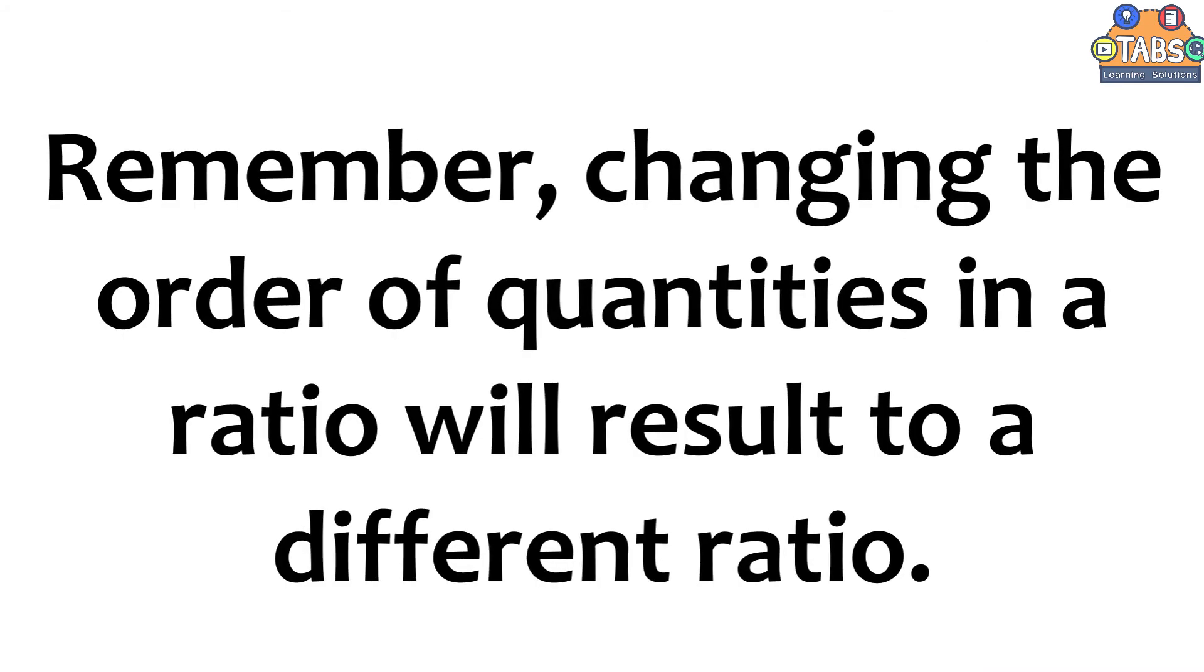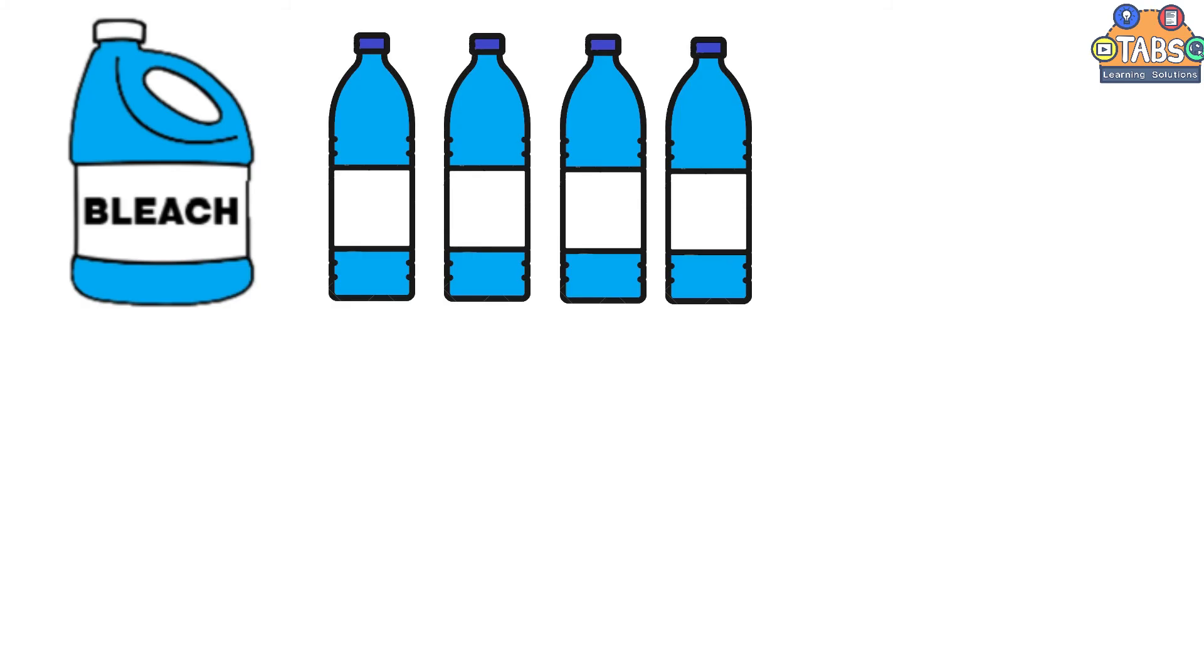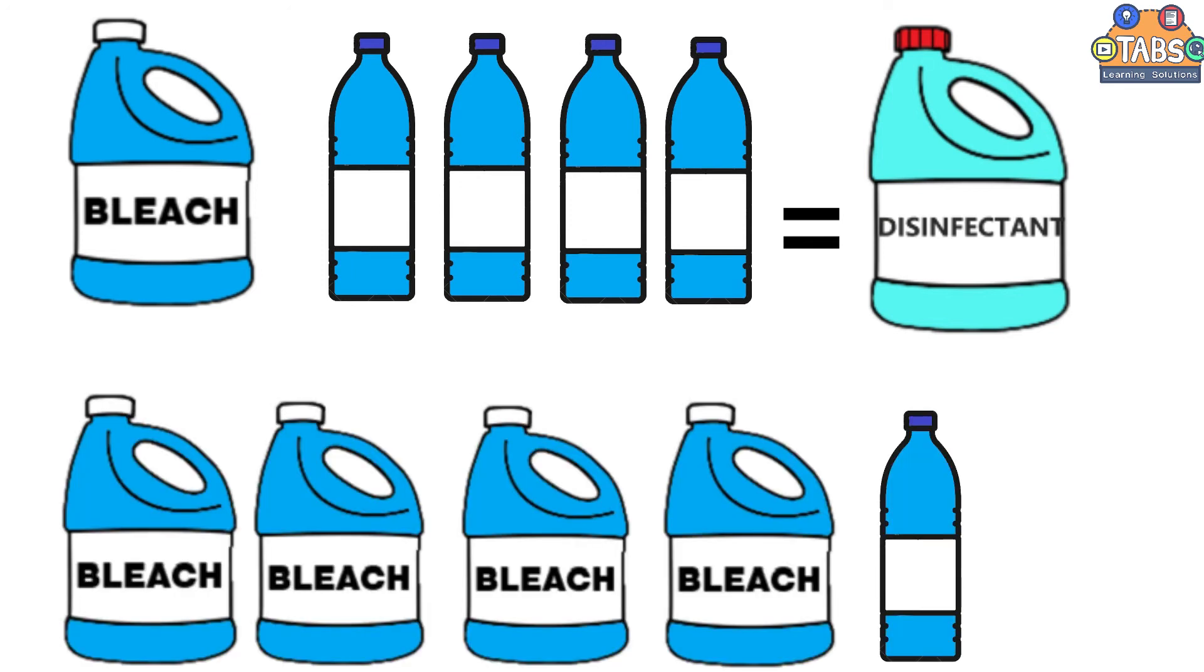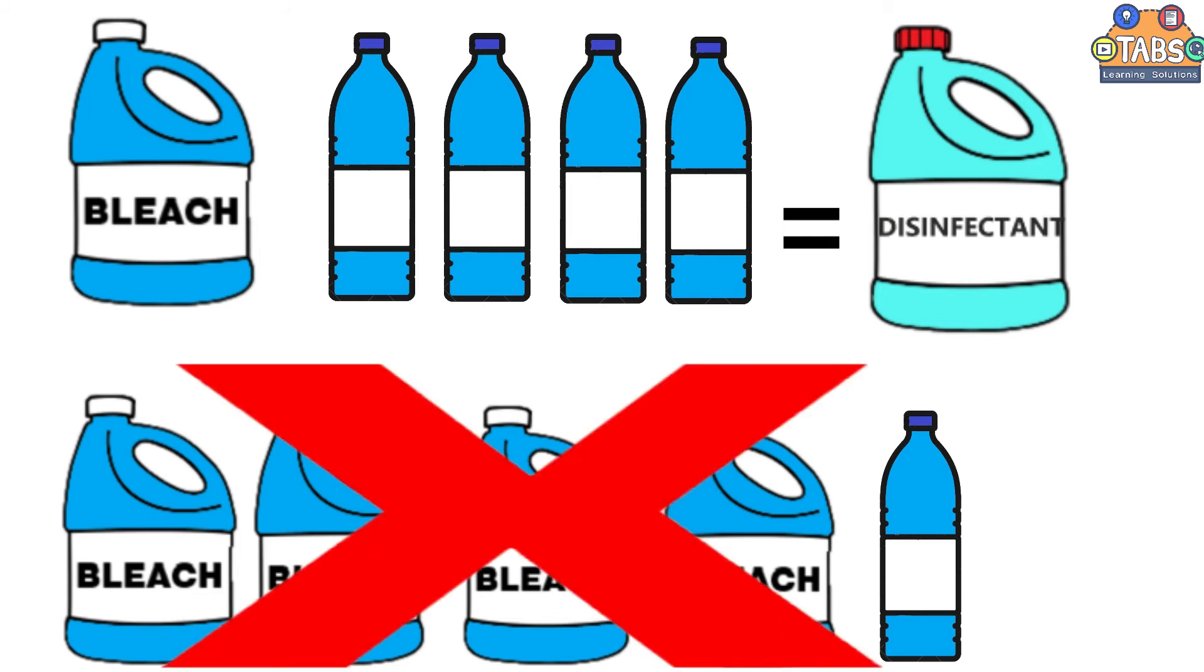But we must remember, changing the order of quantities in a ratio will result in a different ratio. For example, the ratio of disinfectant to water is one is to four. It is important to mix the disinfectant and water in the correct ratio so it can kill germs. What do you think will happen if we exchange the order of the numbers if we put four parts of disinfectant to one part of water? Do you think the solution will still be effective? This is why the order of numbers is important in ratio.